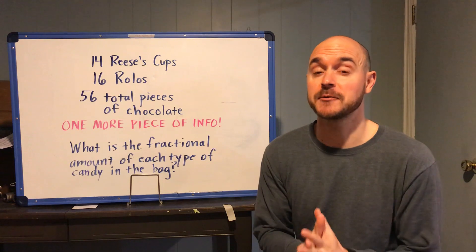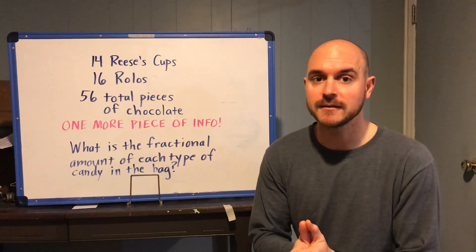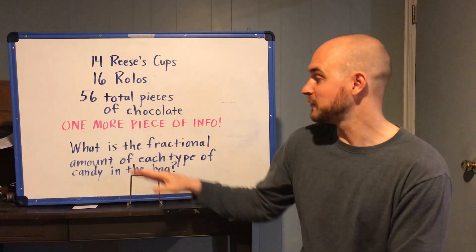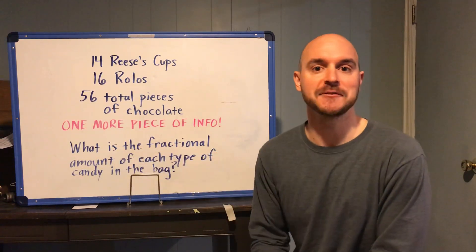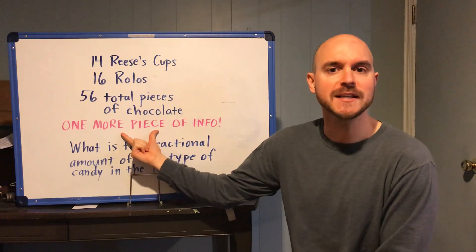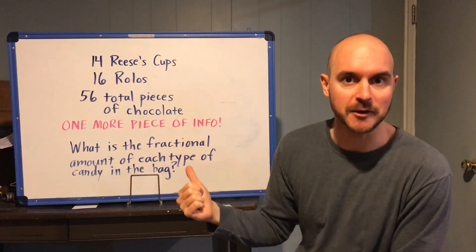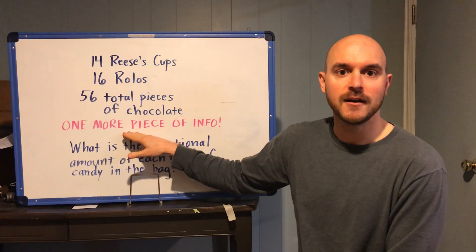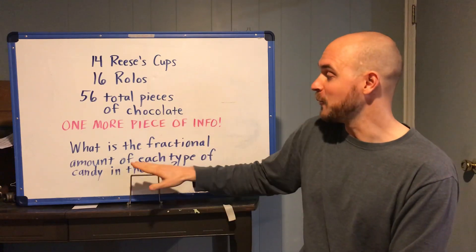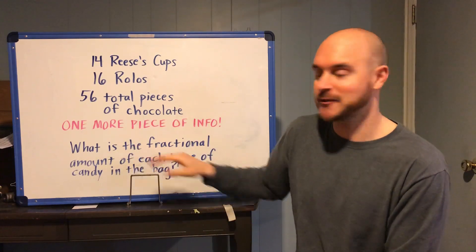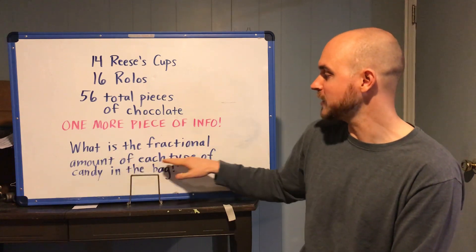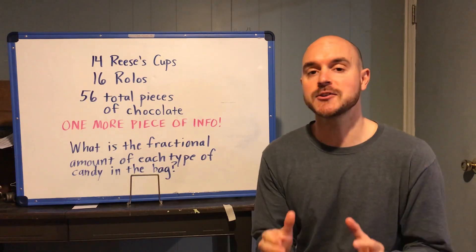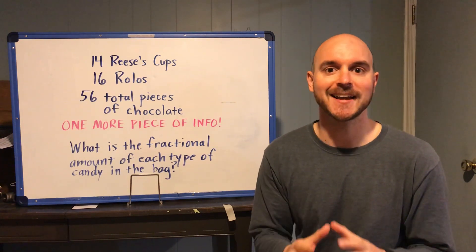So that gives us a lot of information but in order to today now be more exact in finding fractional amounts of the candy there's still one more piece of info that's an abbreviation for information that we need to know along with this information so that we can now answer this question. What is the fractional amount of each type of candy in the bag? Not just what is our estimate but we should be able to come up with an exact answer today.